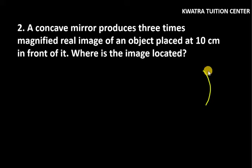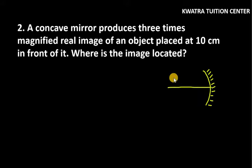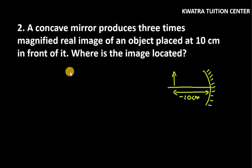We have a mirror. The object is placed at 10 cm. The object is always on the left-hand side, and the left-hand side is always negative. So, the object distance u is minus 10 cm.